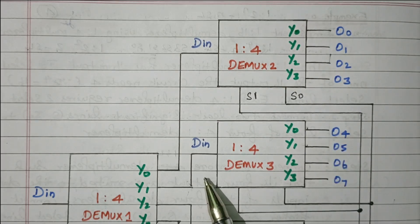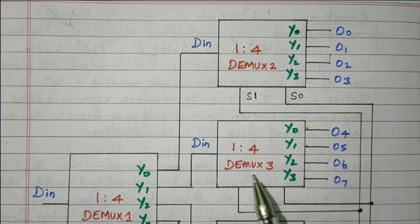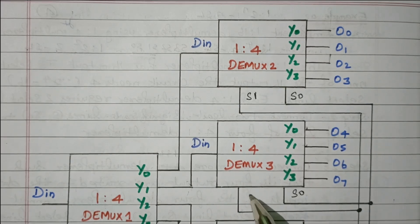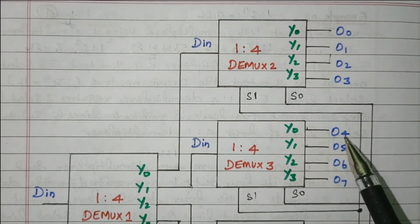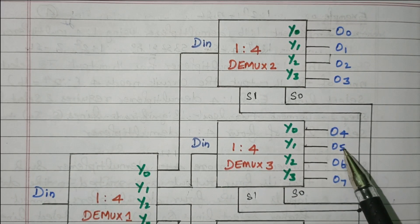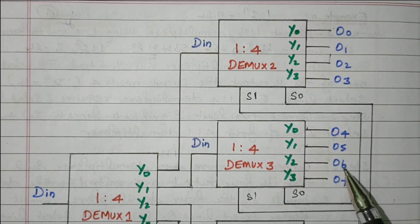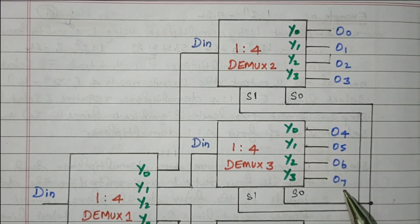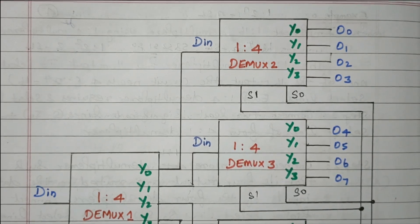When the selection line S3S2 is 01, DMUX3 will be enabled. It is also connected with S0 and S1. When S1S0 is 00 then D4 is selected; 01 means D5; 10 means D6; 11 means D7. Again, the output is based on the selection lines.